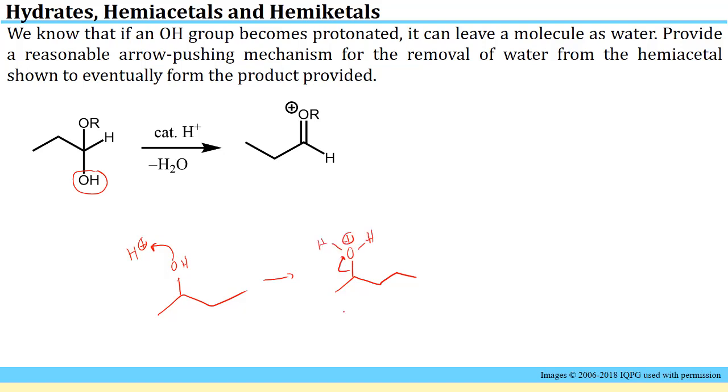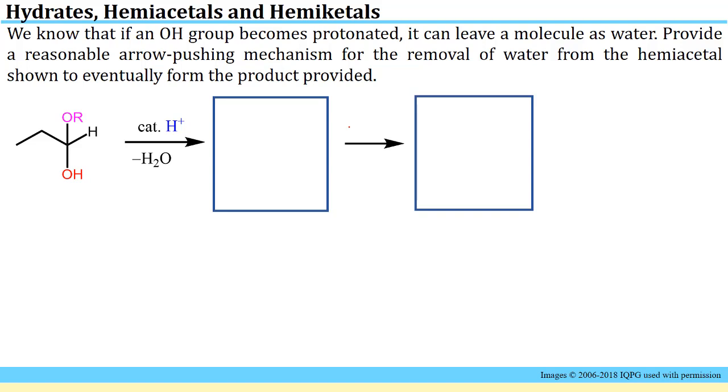After reminding us that that is something we've seen before, this question asks us to provide a reasonable arrow pushing mechanism for the removal of water from the hemiacetal shown here to eventually form the product provided here. We have to think about how we would facilitate that transformation. I'll start by color coding the different groups: the OH group, the OR group, and the H+. The problem gave us a clue that the first step might be protonating the OH group so that it can become water.